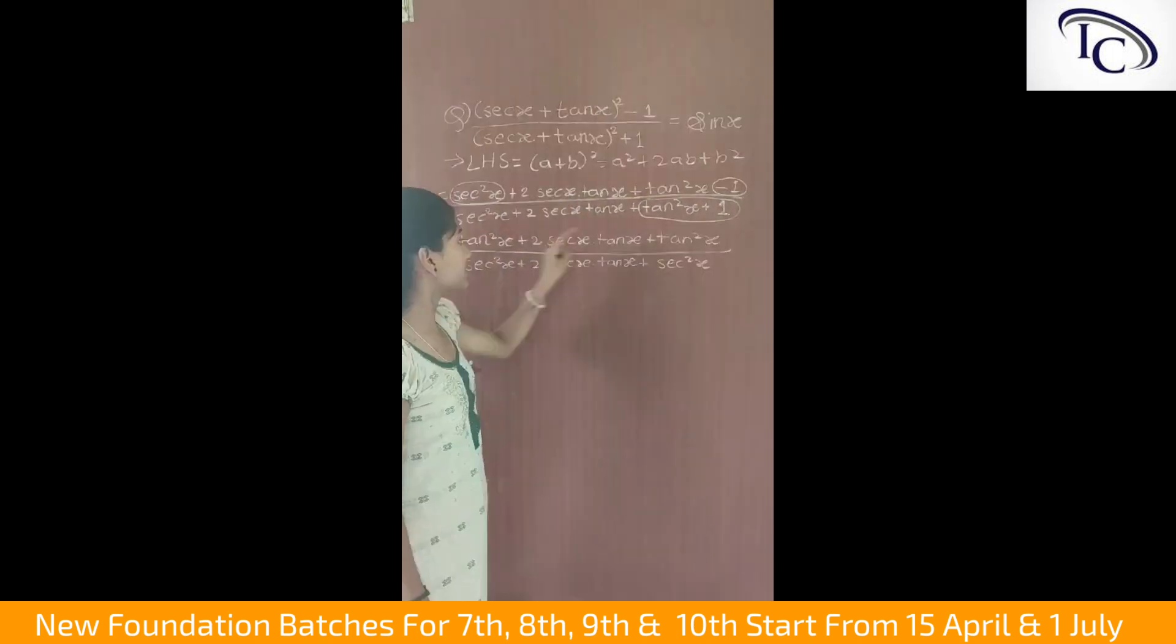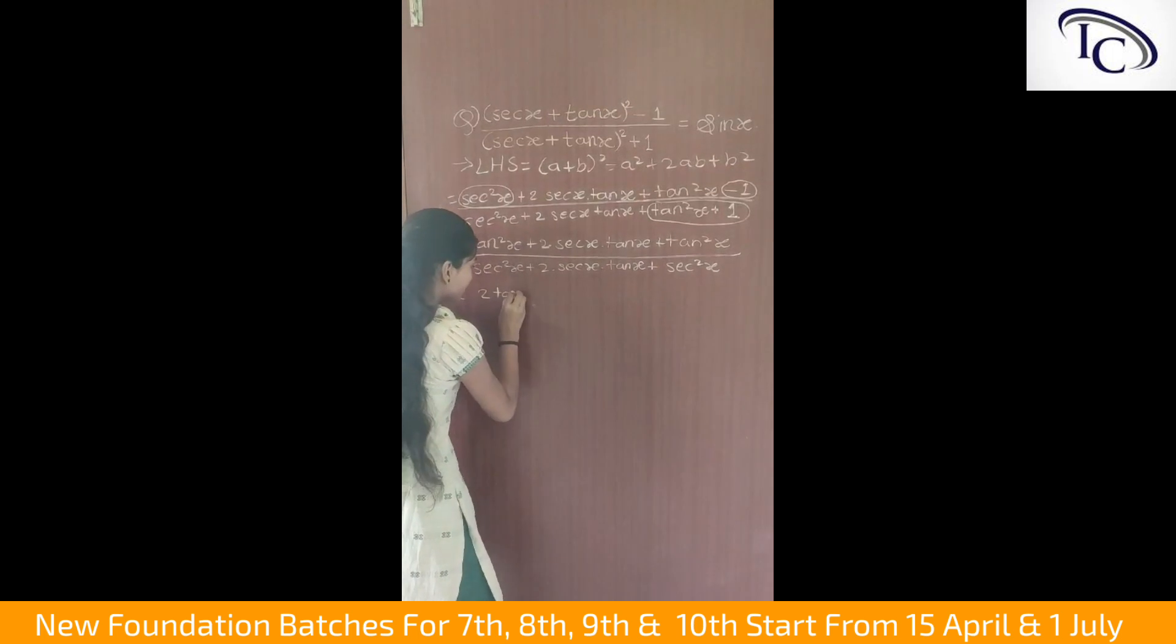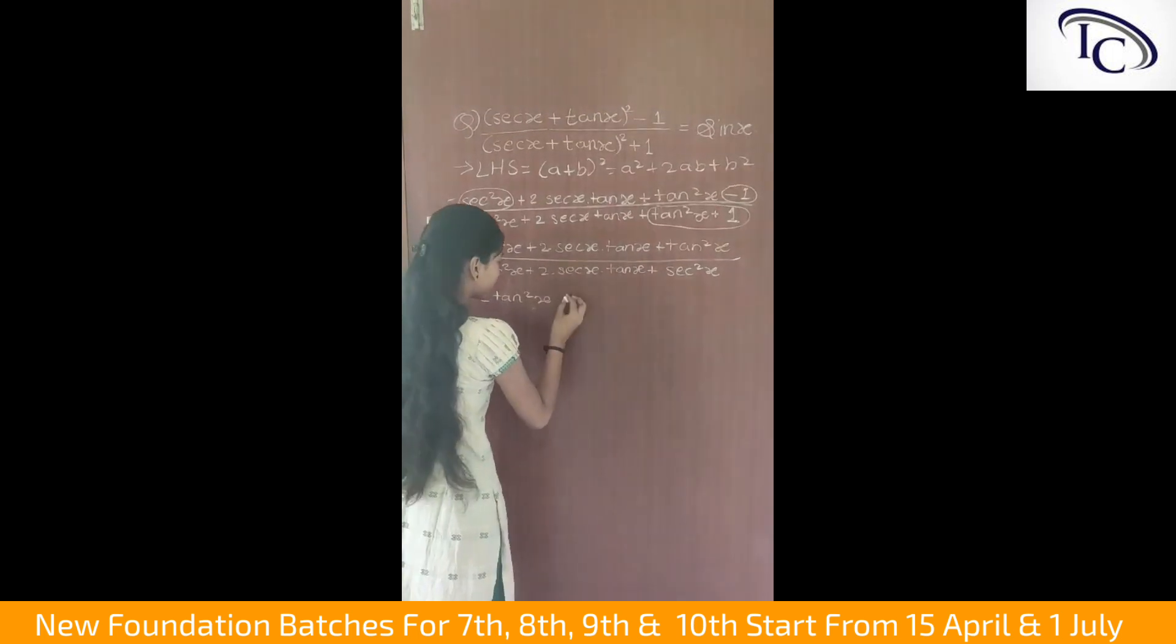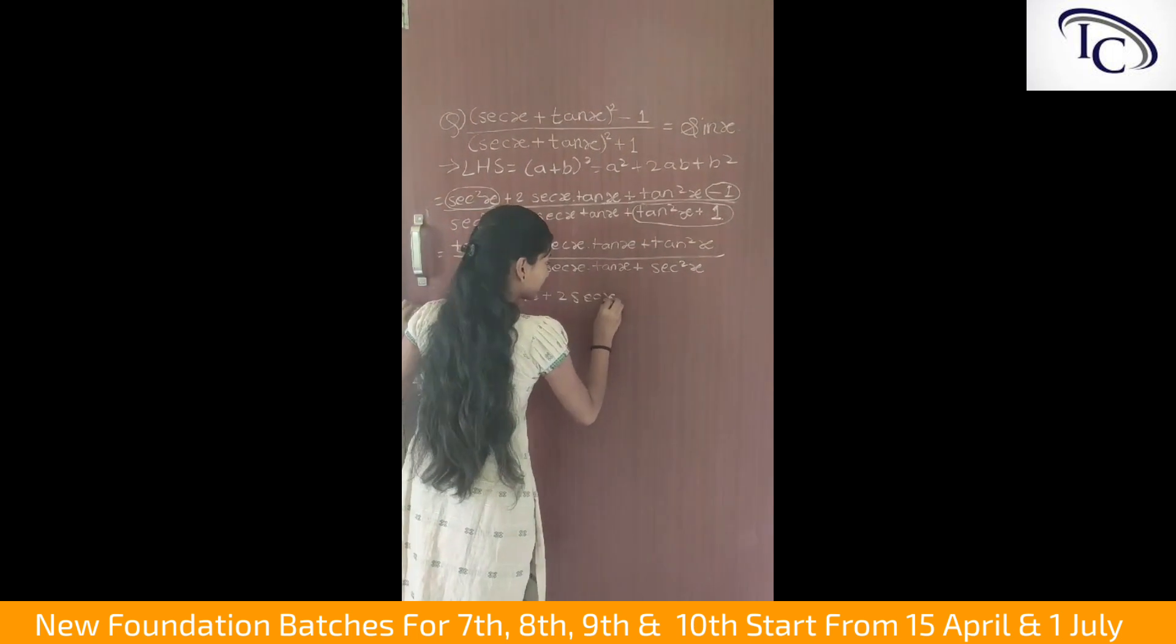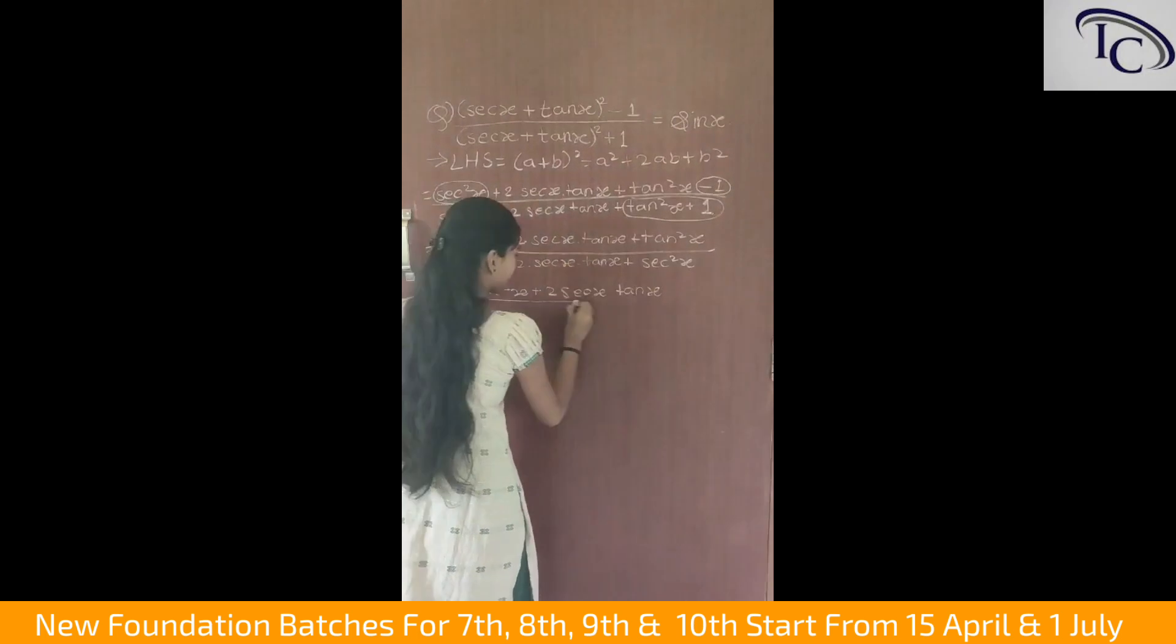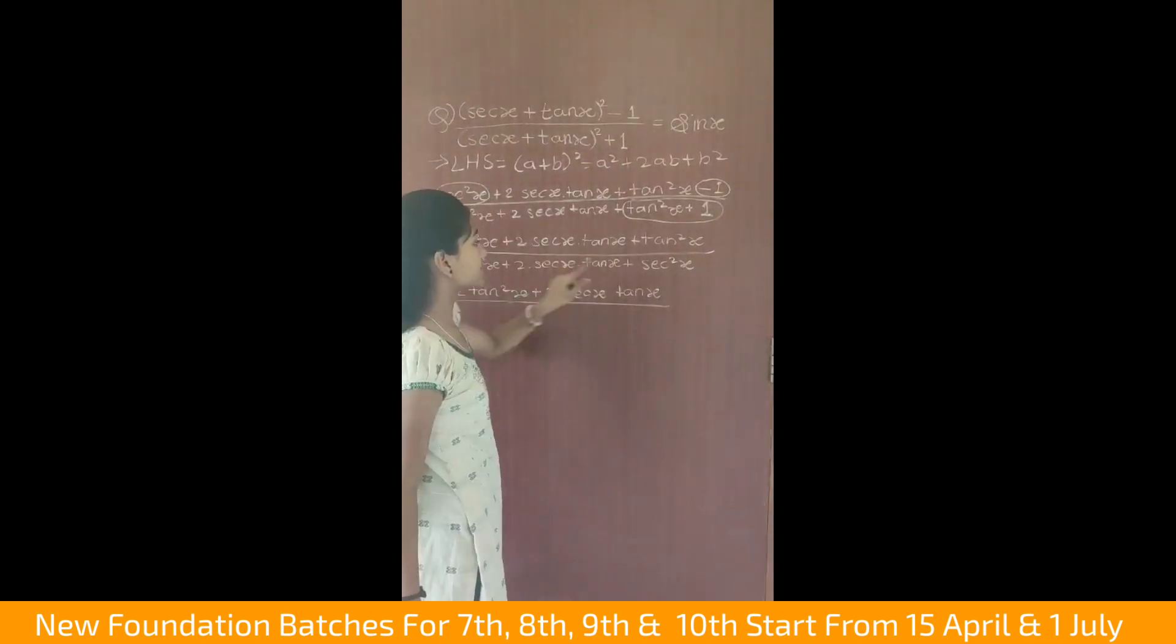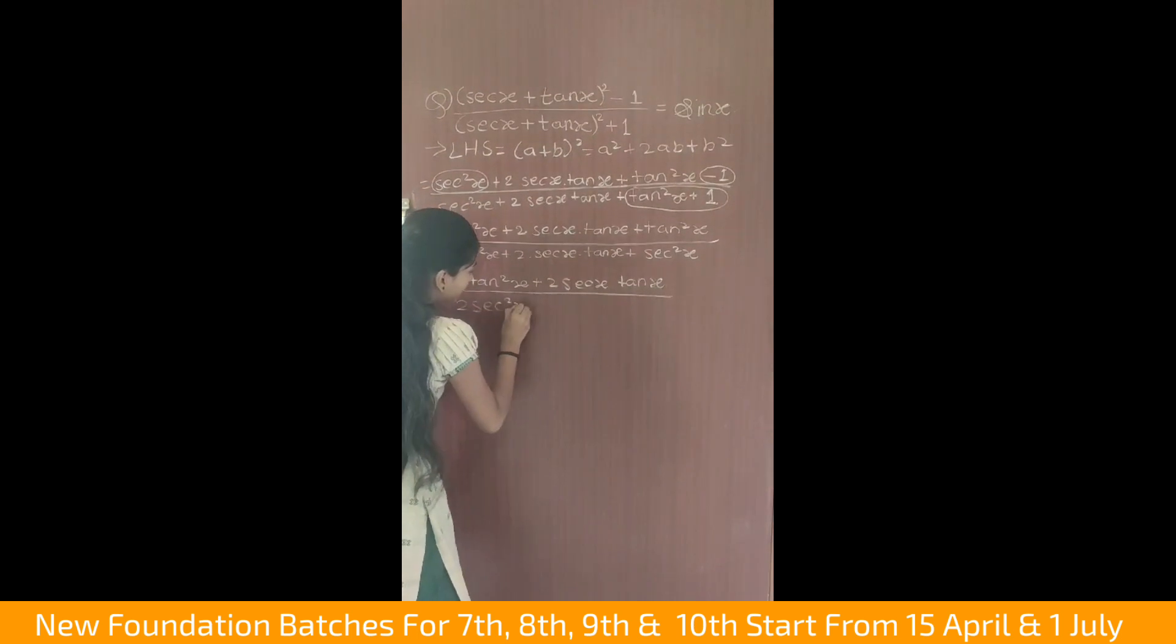Now tan square x plus tan square x is equal to 2 tan square x, and sec square x plus sec square x is equal to 2 sec square x.